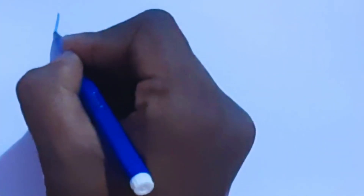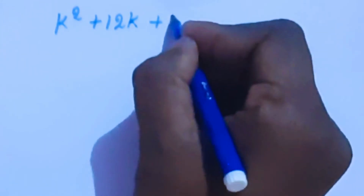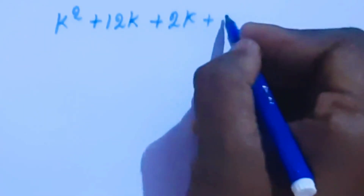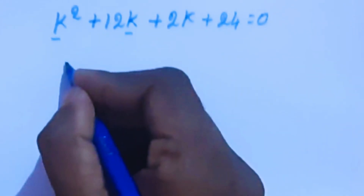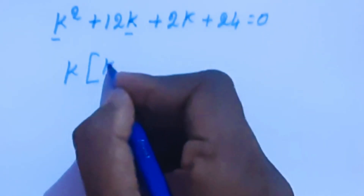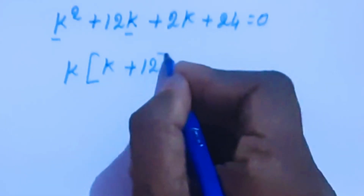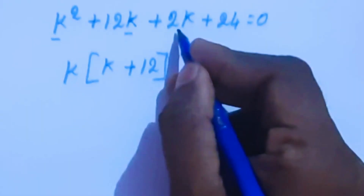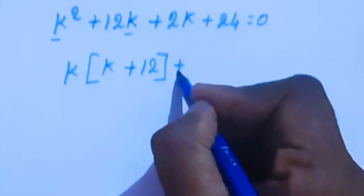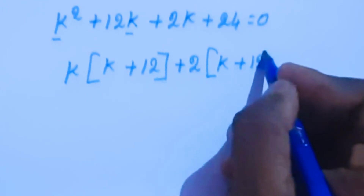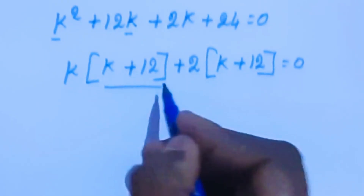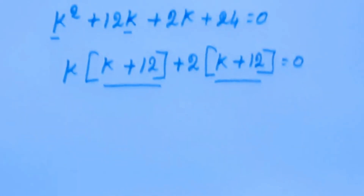So we get k squared plus 12k plus 2k plus 24 equal to 0. Taking k common from the first two terms: k(k plus 12), and taking 2 common from the last two terms: 2(k plus 12) equal to 0. Now taking (k plus 12) common, we get (k plus 12)(k plus 2) equal to 0.